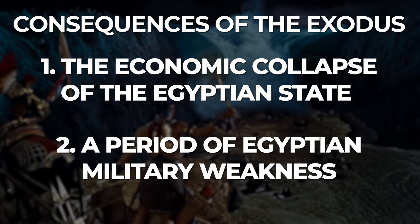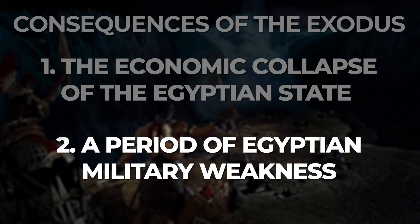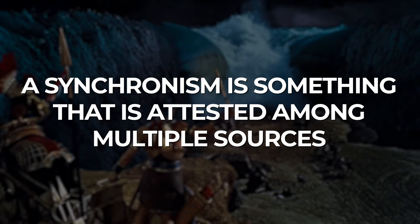The economic collapse of Egypt would be the result of both having lost a substantial labor force in Hebrew slavery and the destruction of people and property by the plagues. The military weakness would be the result of the entire royal army having been drowned, or at least a major portion of it. These two phenomena present an opportunity for us to establish a synchronism – something that is attested among multiple sources.